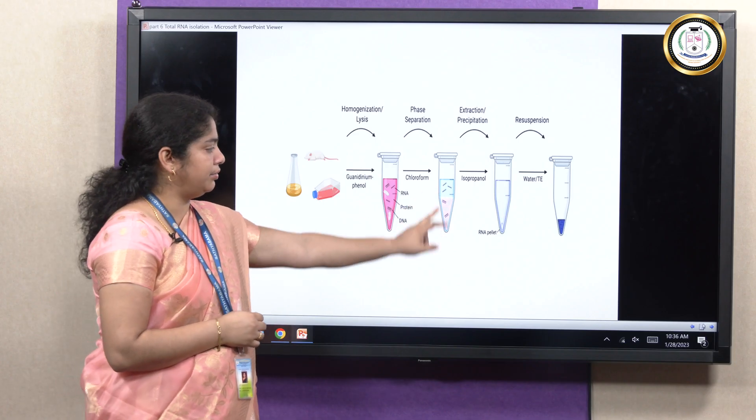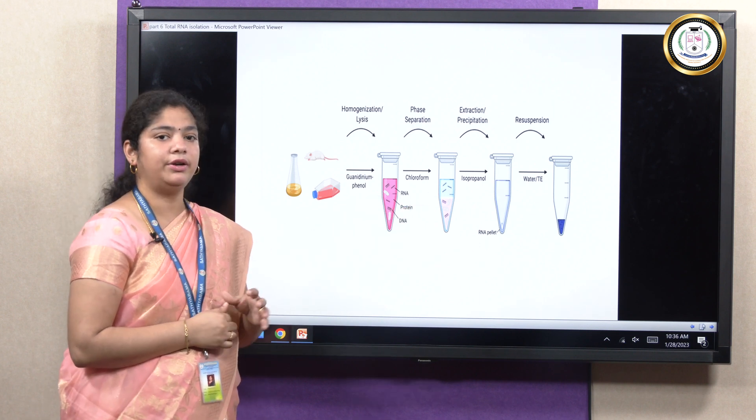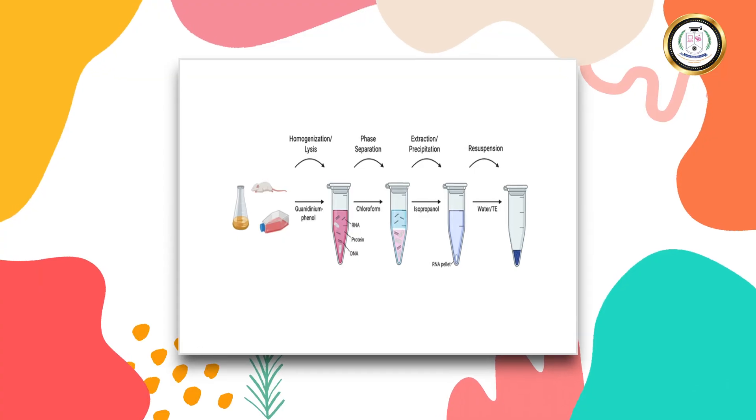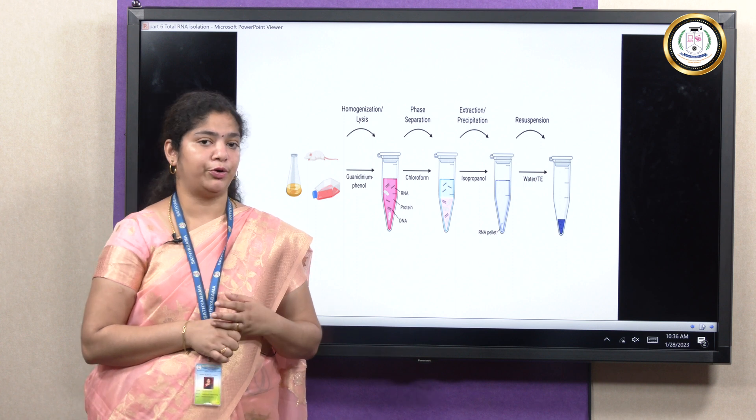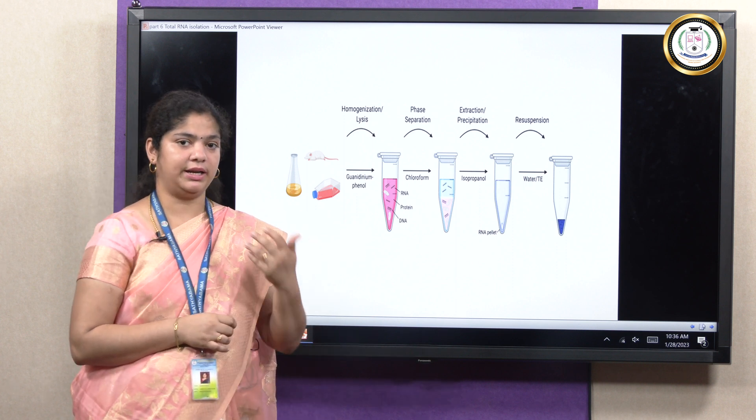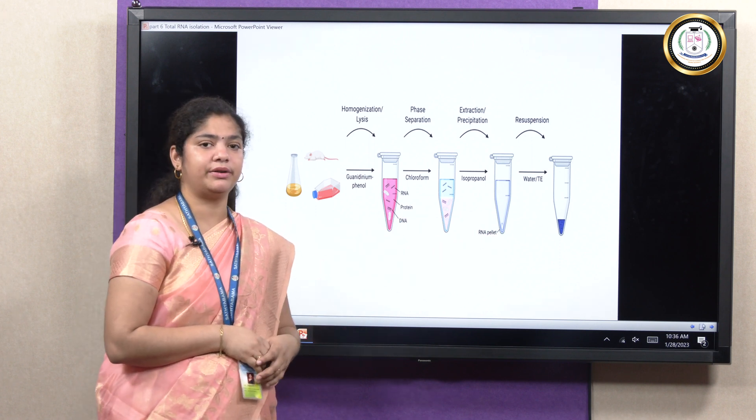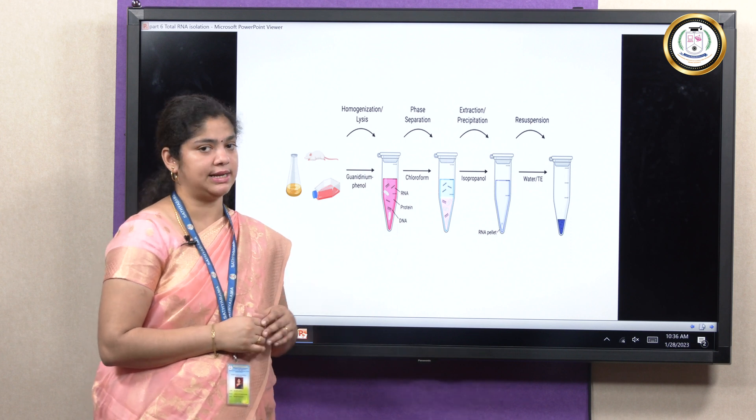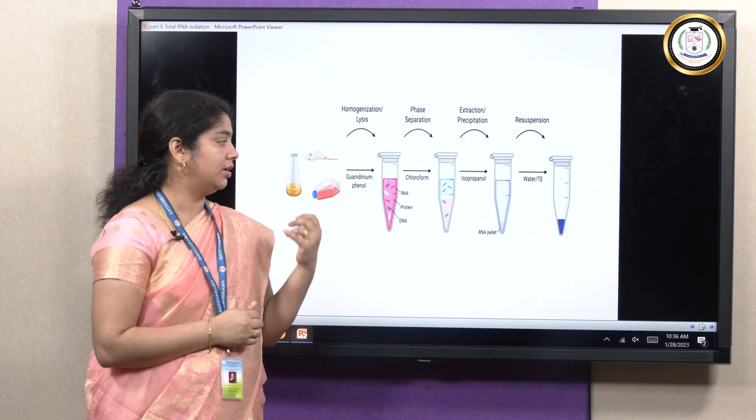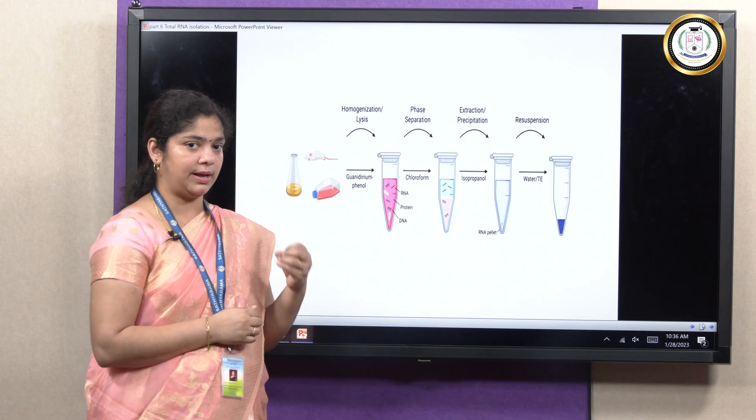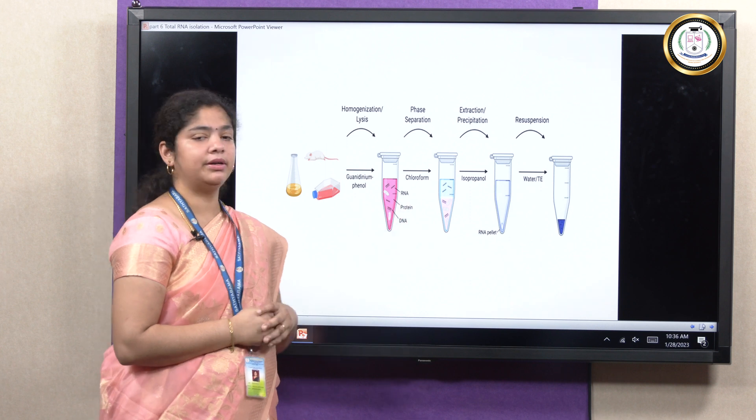So here we can see the two-phase separation. Here it is aqueous phase and the organic phase. In the organic phase, the entire nucleic acid content will be present. Now we can do the extraction or precipitation so that the precipitation can be done using isopropanol. Now the addition of isopropanol will precipitate the nucleic acid content. So the RNA will get pelleted out with high-speed centrifugation at 10,000 rpm at 4 degrees Celsius. And post pelleting out the sample, we can do the resuspension, remove the excess supernatant completely, and ensure there is no water droplet present in it. Air dry for some time and then do the resuspension.